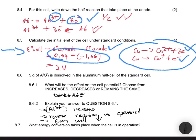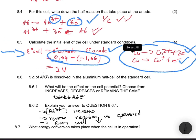Question 8.7 asks what energy conversion takes place when the cell is in operation. For a galvanic cell, we convert chemical energy to electrical energy. For an electrolytic cell, we convert electrical energy to chemical energy.